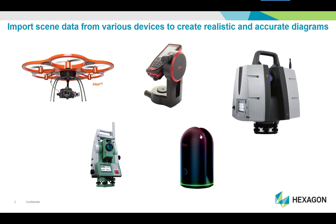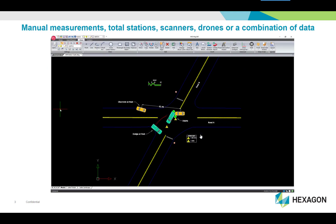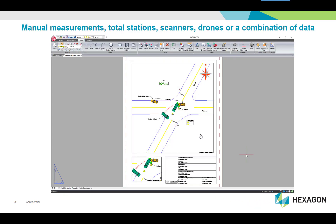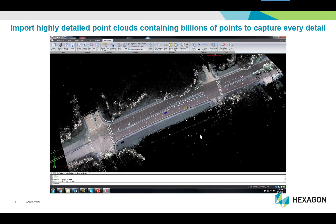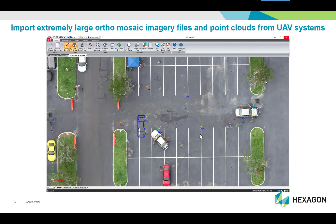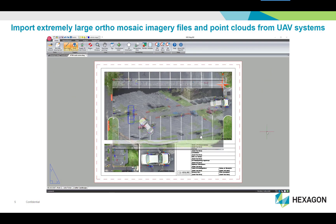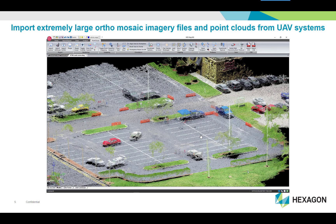Import scene measurements from various devices to produce realistic and accurate diagrams. Whether you're using manual measurements, total stations, scanners, drones, or a combination of data, Map360 provides the tools to easily and quickly create a basic 2D or 3D diagram.